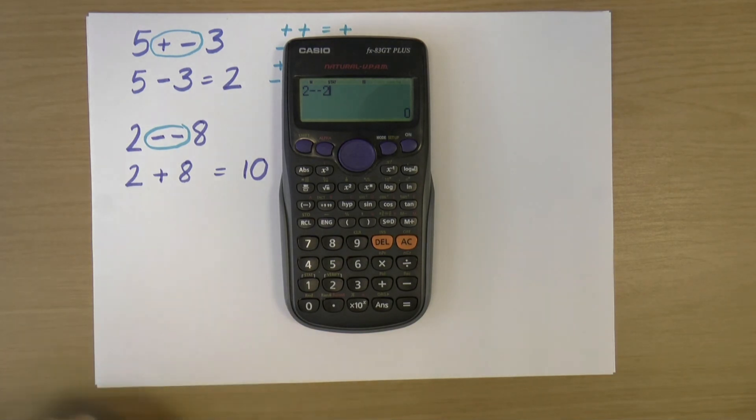And of course the sum was actually 2 take away negative 8. There we go. So we've got 10.